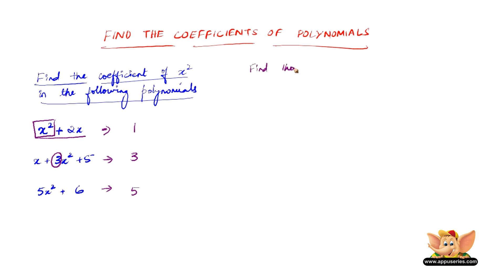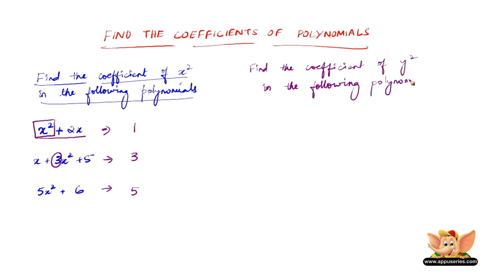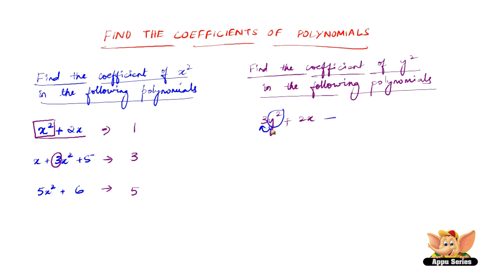Similarly, let us find the coefficient of y² in the following polynomials. Let us consider the first expression to be 3y² plus 2x. The question is: find the coefficient of y², which is 3. Therefore, the coefficient of y² is 3.